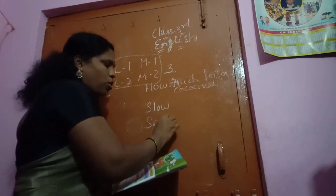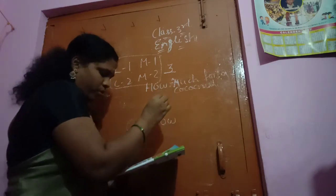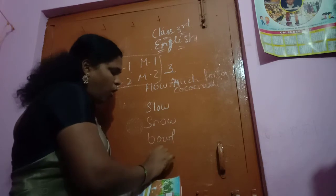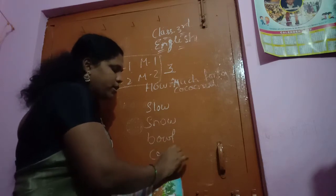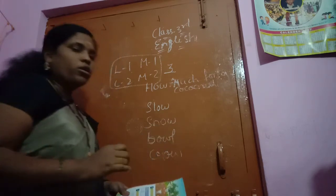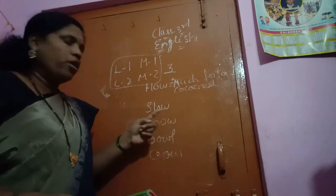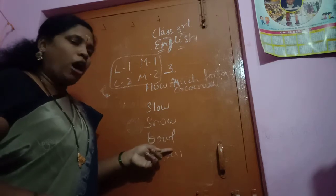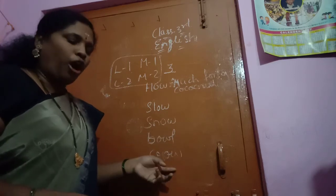Snow. Ball. Crow. These OW words: Snow, Slow, Ball, Crow.